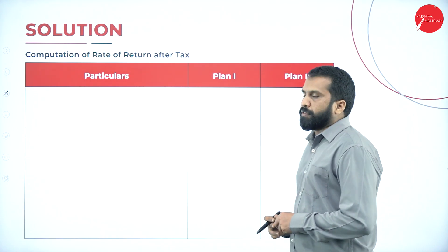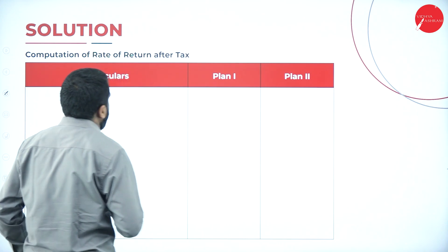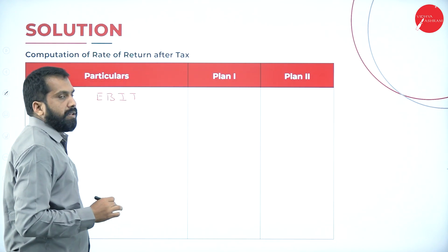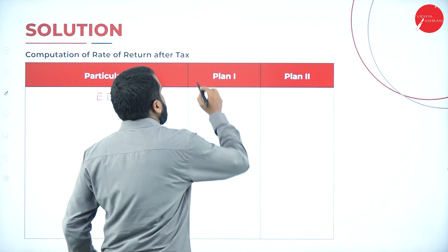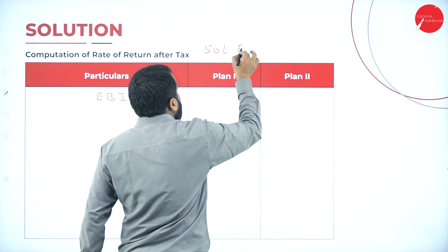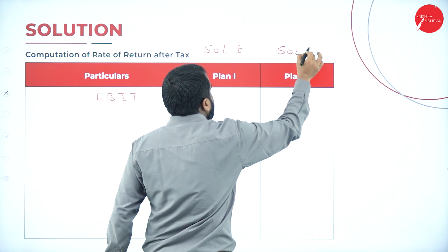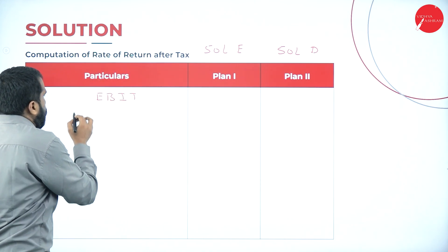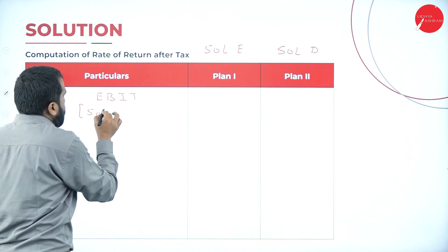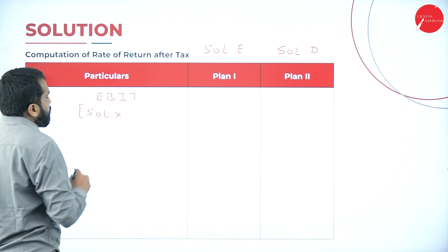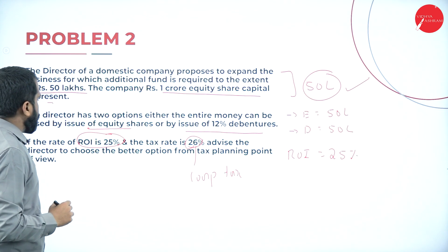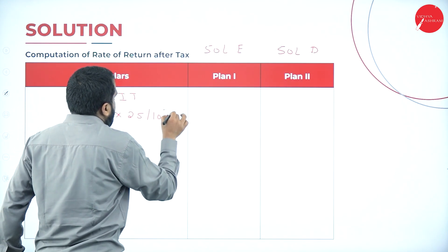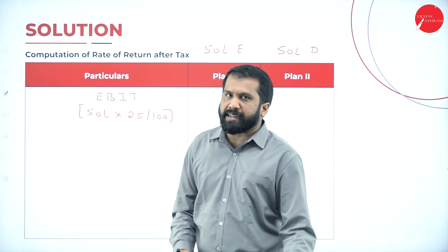We will now compute the rate of return after taxation. The first line item is EBIT. Option 1 is 50 lakh equity and Option 2 is 50 lakh debenture. To calculate EBIT: 50 lakh multiplied by 25% (return on investment, 25 divided by 100).